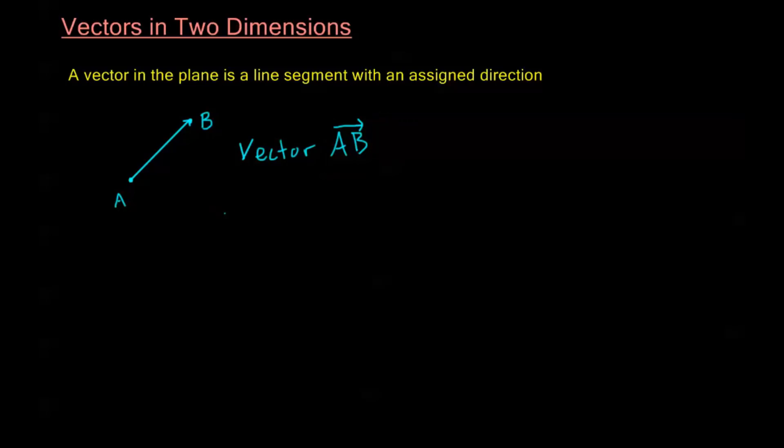We call A here the initial point of the vector. So, this is my initial point. And we've used this term initial a lot in this class. So, I bet you can guess what's coming up next. We call B the terminal point of the vector. So, vector AB, we have an initial point and a terminal point.